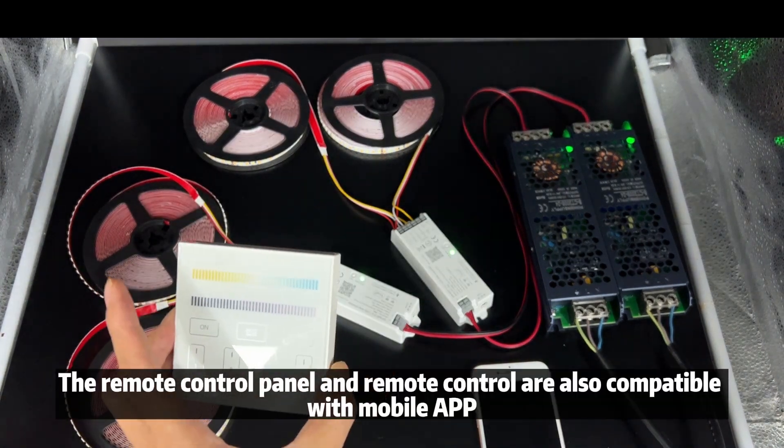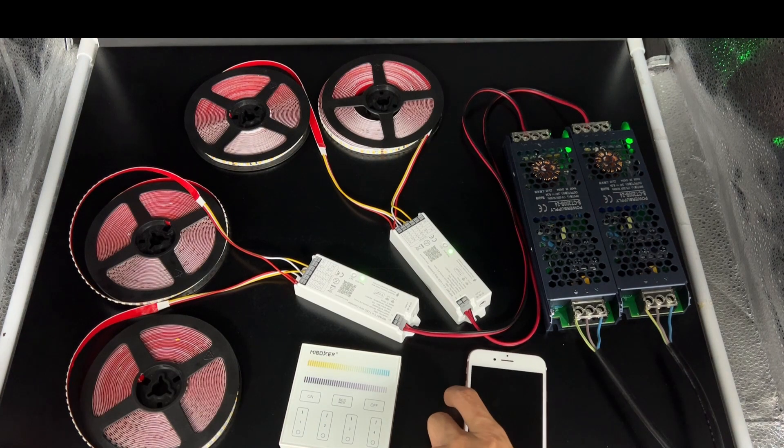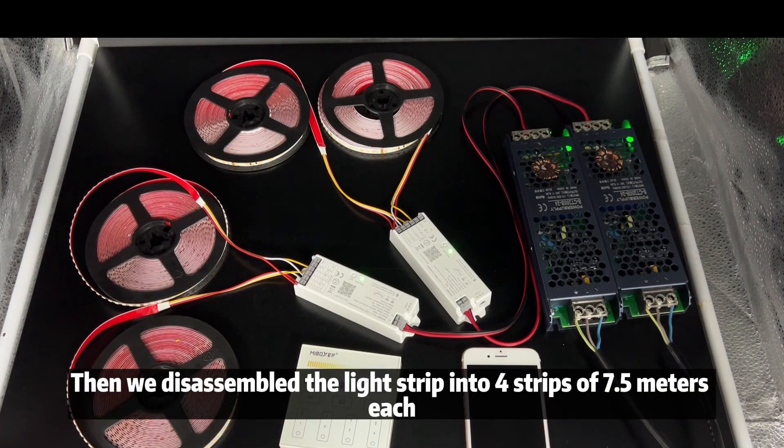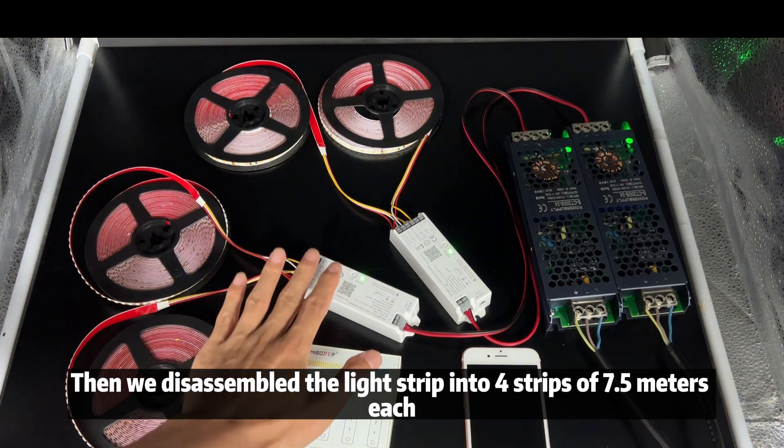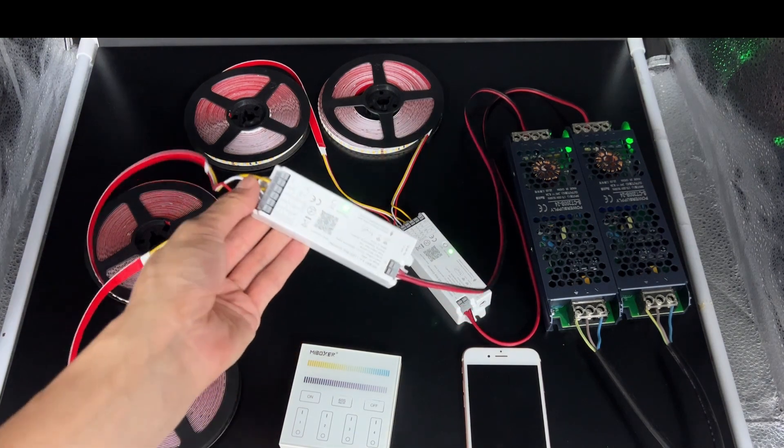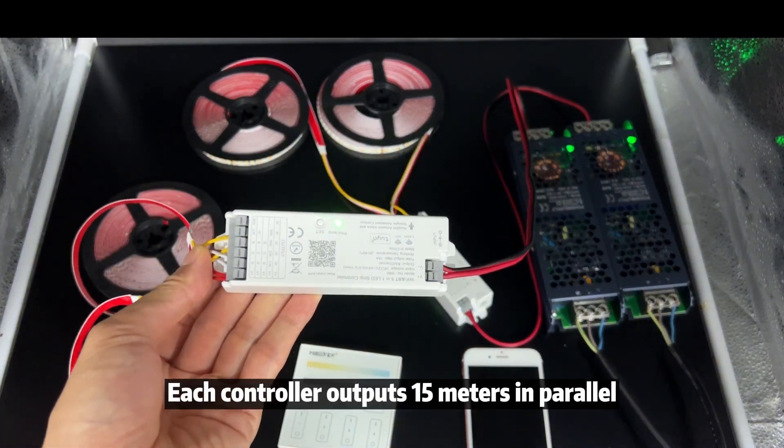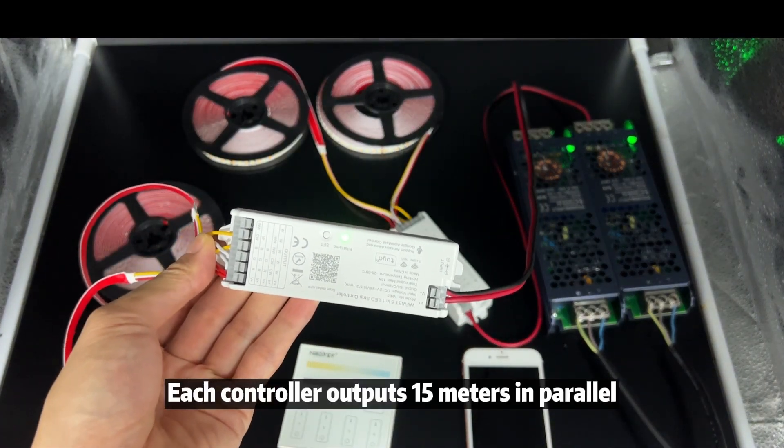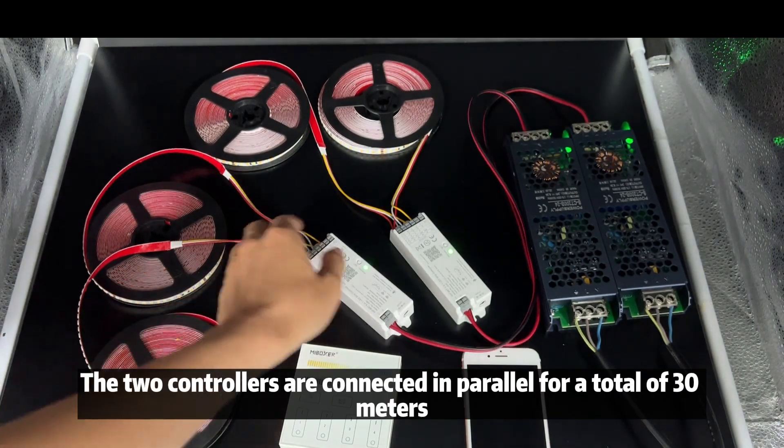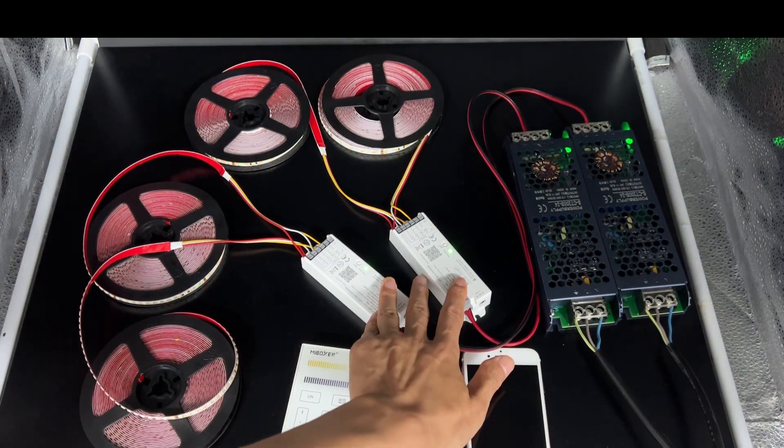The remote control panel and remote control are also compatible with mobile app. Then we disassembled the light strip into 4 strips of 7.5 meters each. Each controller outputs 2 groups of 7.5 meters. Each controller outputs 15 meters in parallel. The two controllers are connected in parallel for a total of 30 meters.